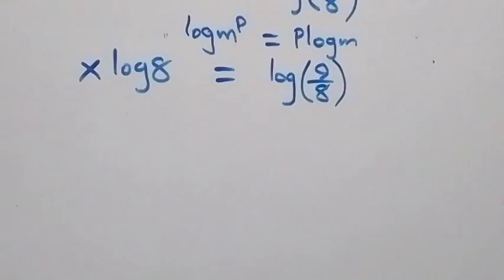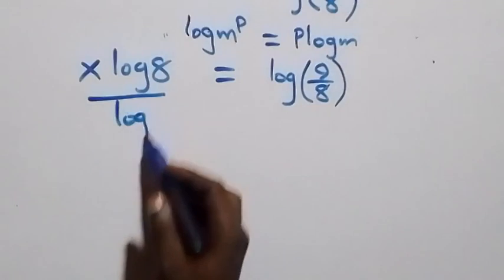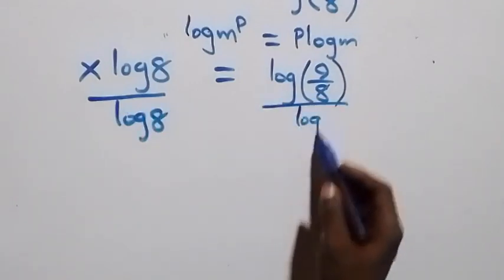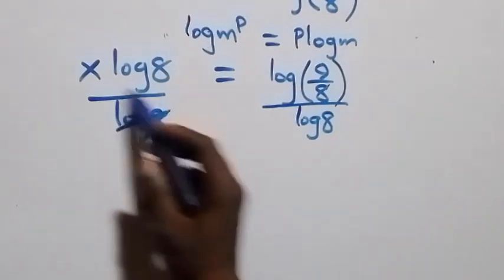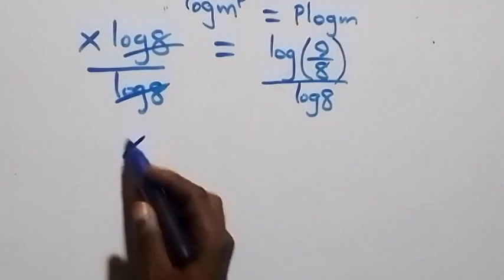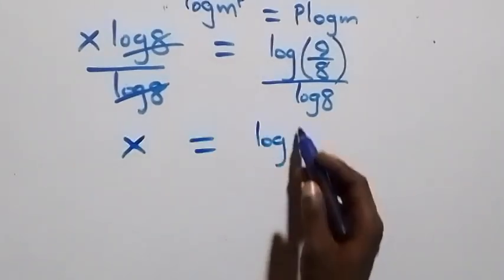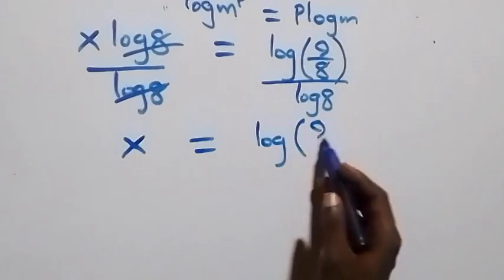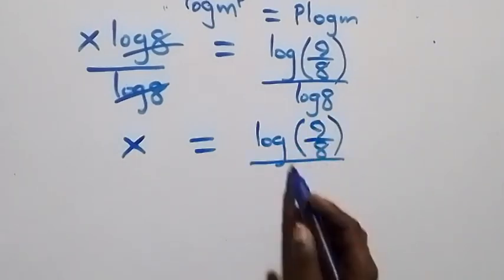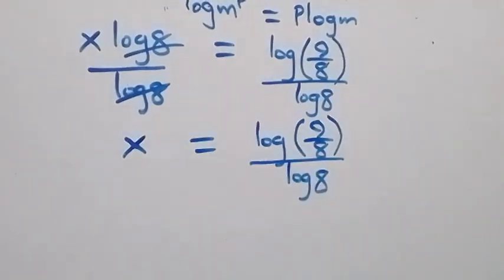From here we divide both sides by log 8 — divide this side by log 8 and also divide this side by log 8. This implies log 8 cancels, and we are left with x equals log(9/8) divided by log 8.